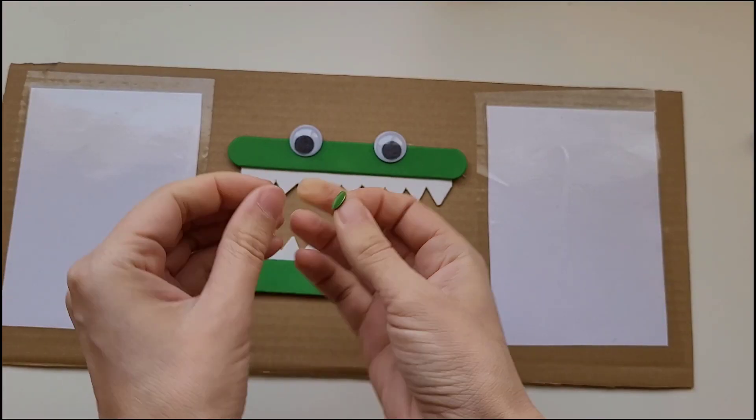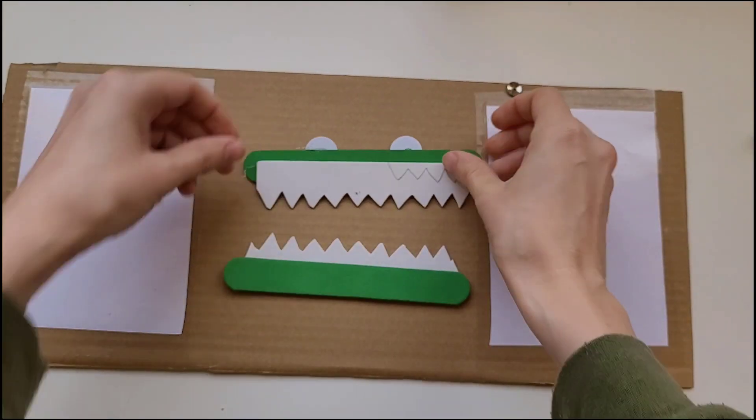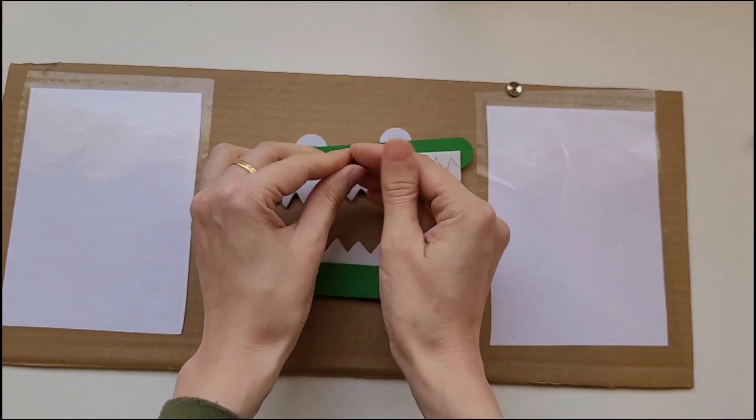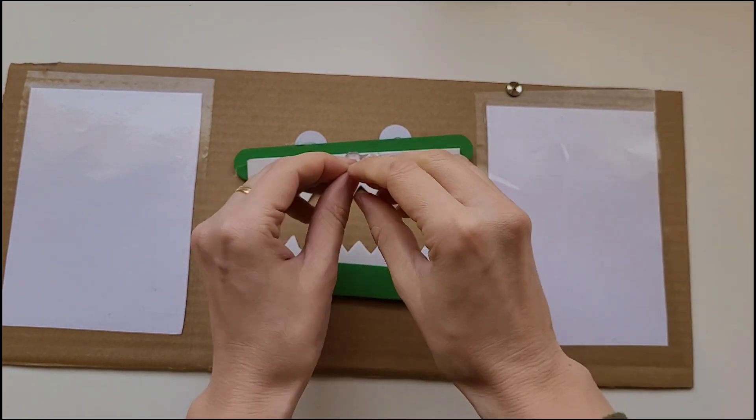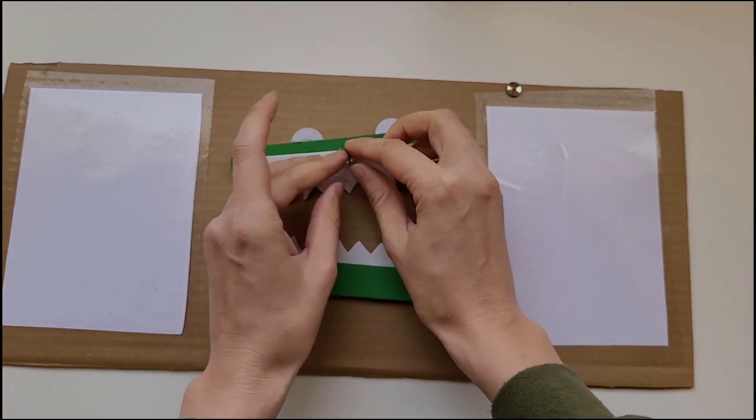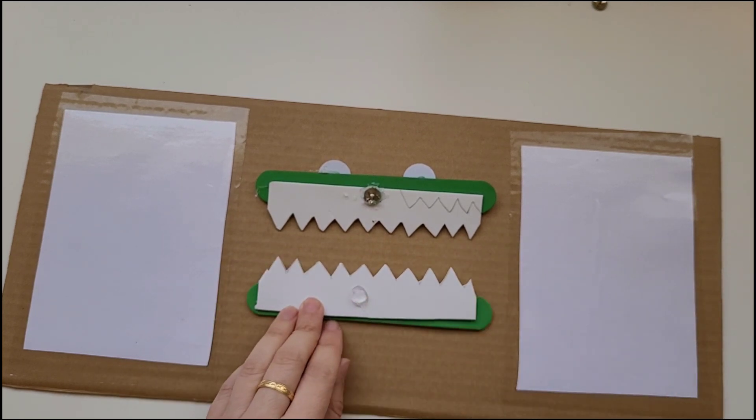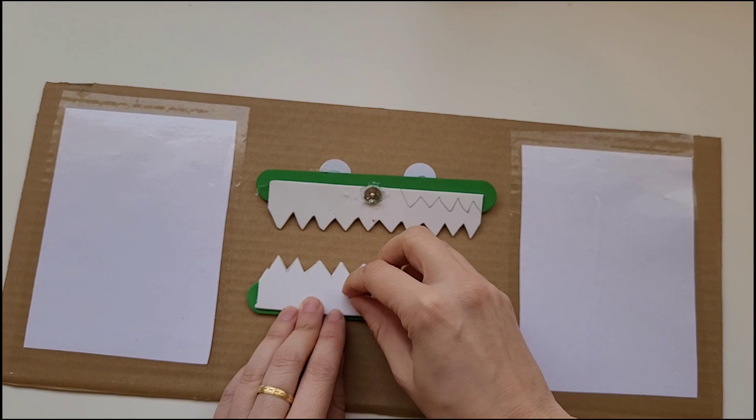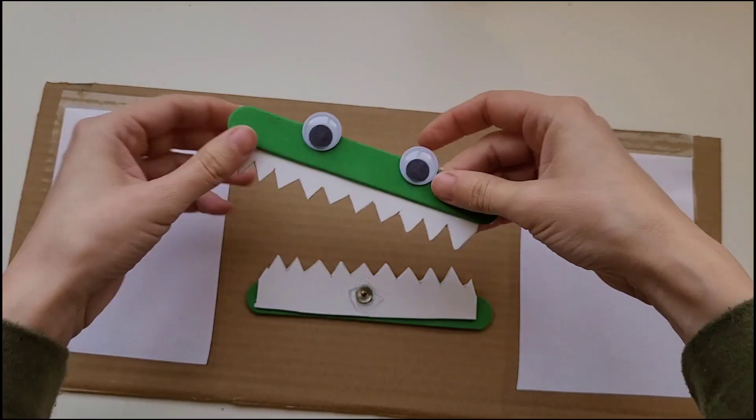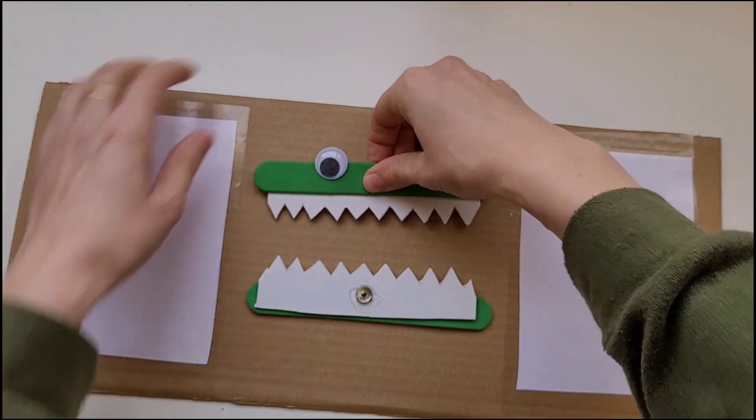Next we're going to use these tacks or push pins. We're going to glue them on the back side of the craft stick. We're going to make sure that they are in the center. After we glue the push pins on the back side of each craft stick we can now turn them over and place them into the cardboard.